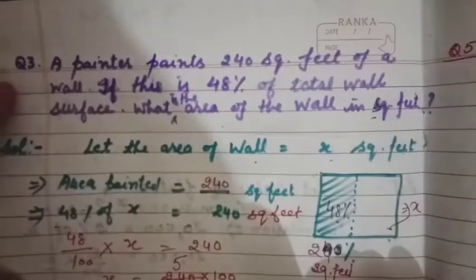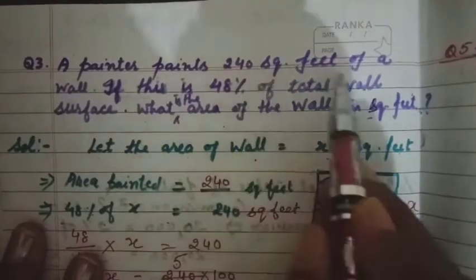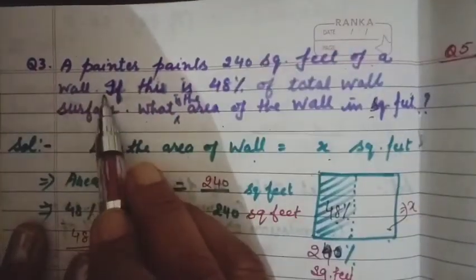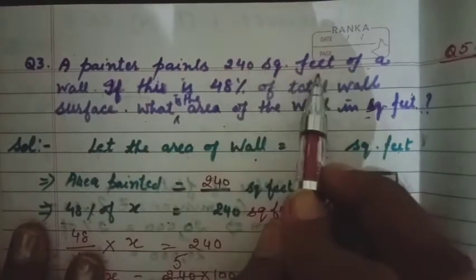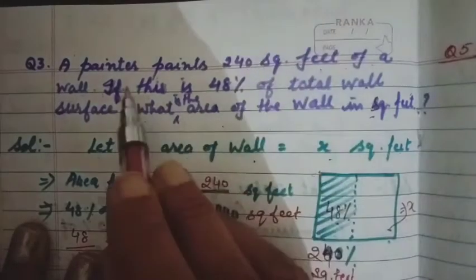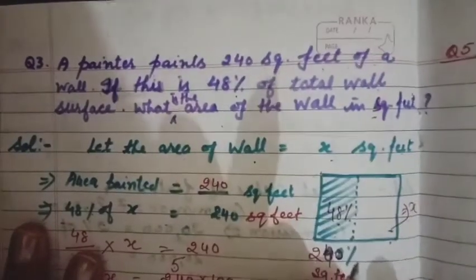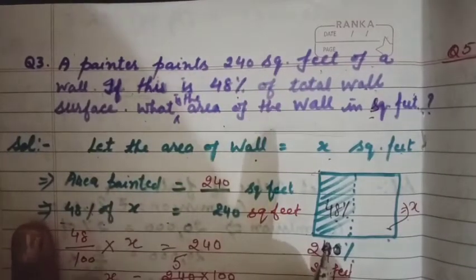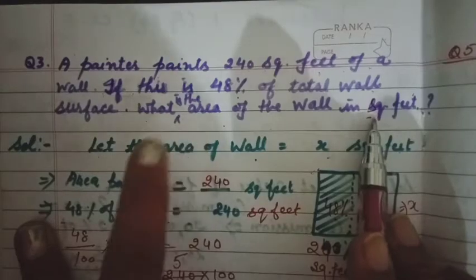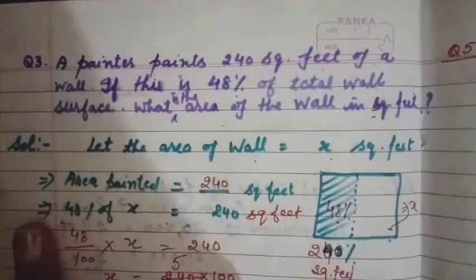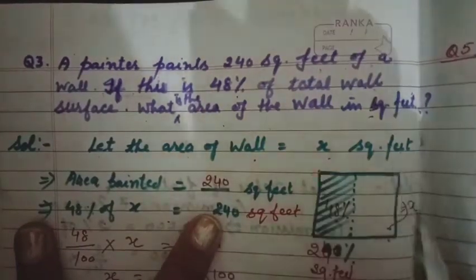Third question: A painter paints 240 square feet of a wall — एक painter ने एक wall को 240 square feet paint किया है। If this is 48% of the total wall — अगर जो painted area है वो सिर्फ 48% है — तो what was the area of the wall in square feet? Wall का total area कितना है वो square feet में बताना है। एक diagram draw किया है समझाने के लिए।